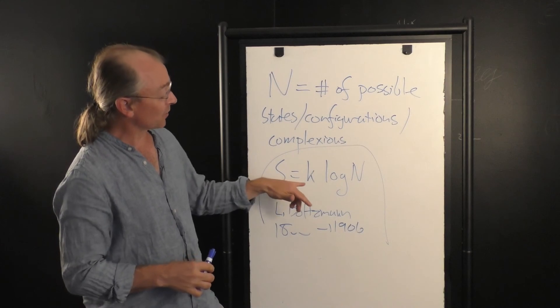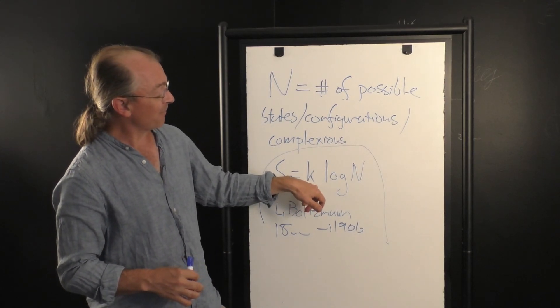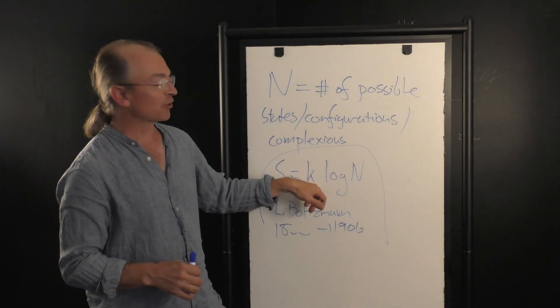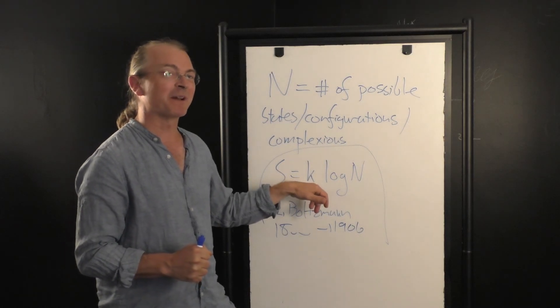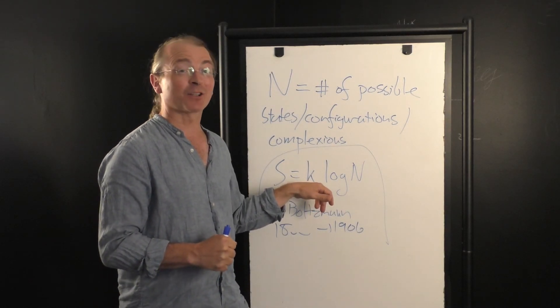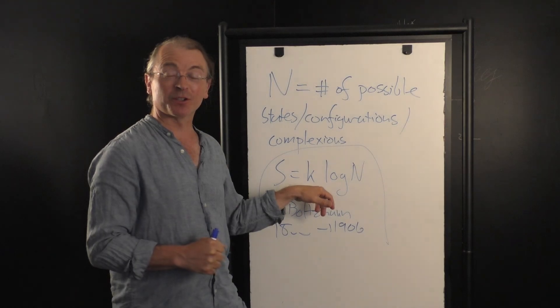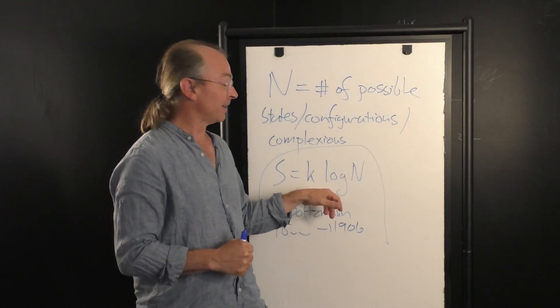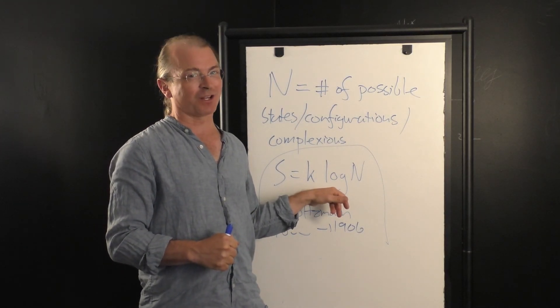there's an interesting story, which is that this constant K, that's on Boltzmann's grave, was actually not defined by Boltzmann, but by the famous German physicist Max Planck. And it was originally called Planck's constant.